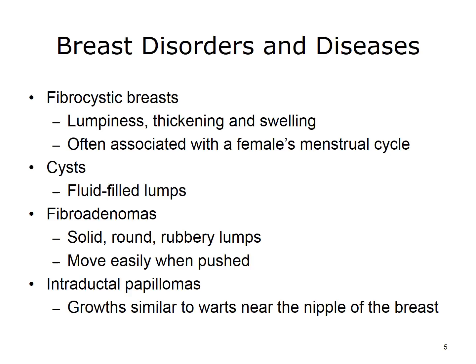Now let's look at some of the disorders and diseases of the female reproductive system. Most women experience breast changes at some point in their lives. A woman's age, hormone levels, and medications may cause lumps, bumps, or discharges. Minor and serious breast problems often have similar symptoms. Common non-cancerous breast disorders include fibrocystic breasts, characterized by lumpiness, thickening, and swelling, often associated with the menstrual cycle; cysts, which are fluid-filled lumps; fibroadenomas, which are benign, solid, round, rubbery lumps that move easily when pushed; and intraductal papillomas, which are growths similar to warts near the nipple.